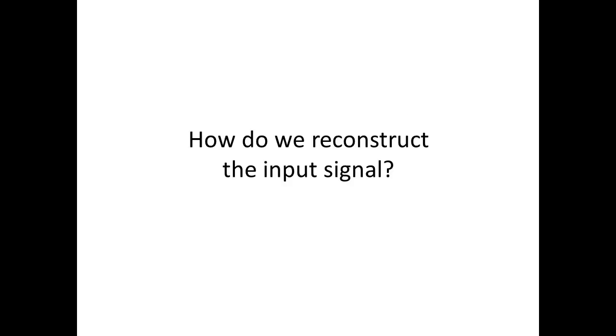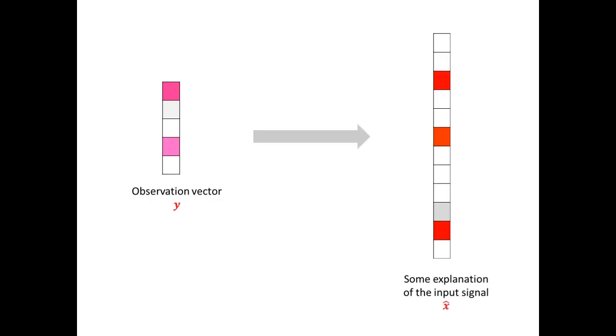Our goal is to reconstruct the input signal x from the noisy observations y. How do we do that? Using the observation vector y, we want to find a good explanation of the input signal x that matches the observations y. We call that explanation x hat.